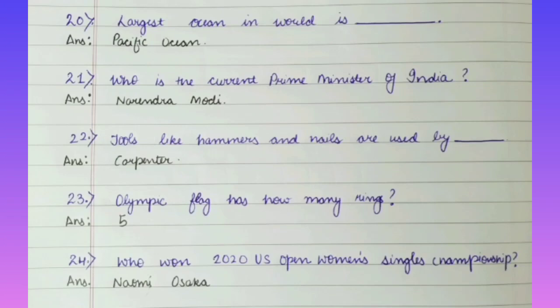Question No. 22: Tools like hammers and nails are used by Dash. Answer is Carpenter. Question No. 23: The Olympic flag has how many rings? Answer is 5. Question No. 24: Who won the 2020 US Open Women's Singles Championship? Answer is Naomi Osaka.